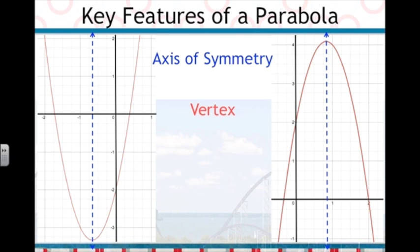Next, we have the vertex. This is the point on the parabola that is the highest or lowest, and the axis of symmetry goes through it.